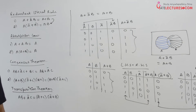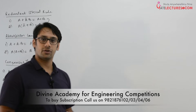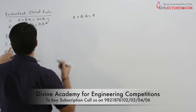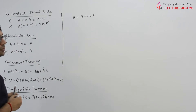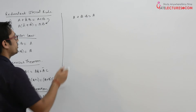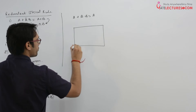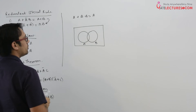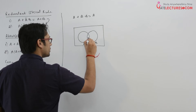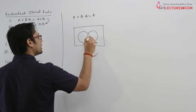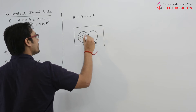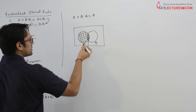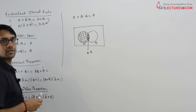Now let us prove the absorption law. It says if we have A plus A dot B, it can be written as A. We can prove it using a Venn diagram. This is the universe; assume this is A and this is B. A dot B is this intersection region. We are selecting A dot B and also the complete A. As you can see, this just covers the complete A. So A plus A dot B equals A.